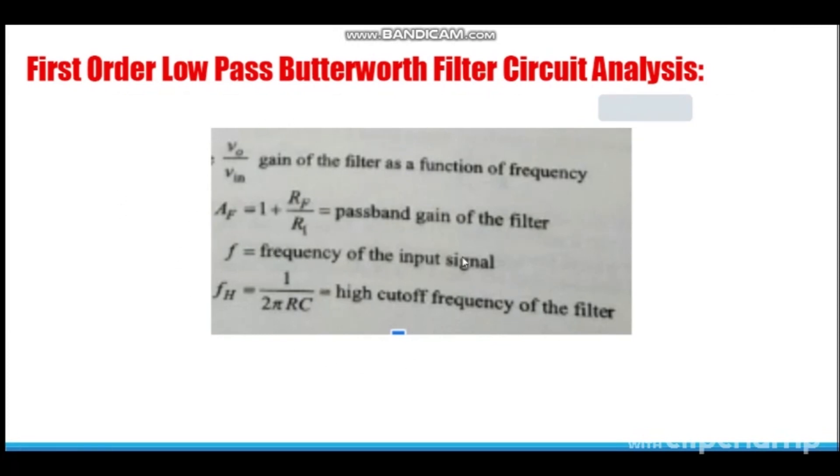These are some important formulas which you need to note down, and these are extremely important in exam point of view because you will be getting problems for designing of filters. So here AF, that is pass band gain of the filter, is given by 1 plus RF upon R1. F is the frequency of the input signal, and FH which is the high cutoff frequency of low pass filter, is given by 1 upon 2 pi R into C.